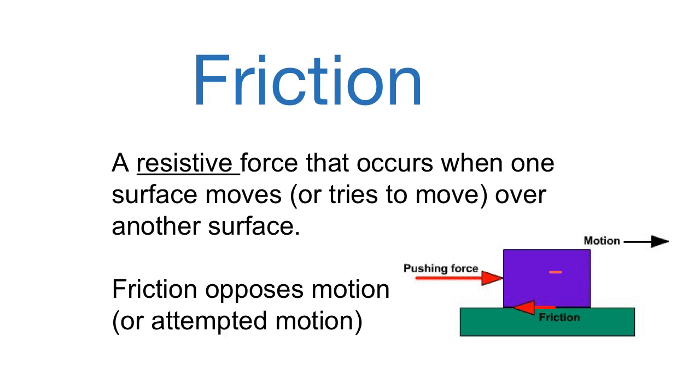For example, if this box is moving this way, friction is going to try to slow it down and oppose that motion in this direction.